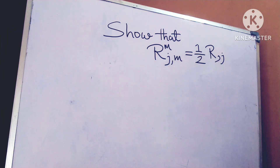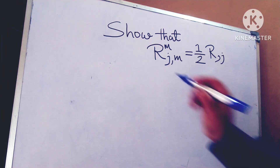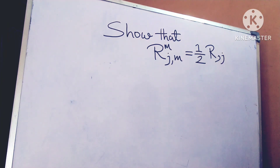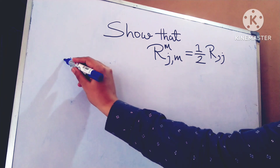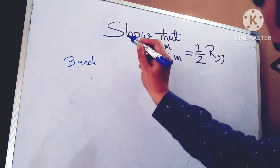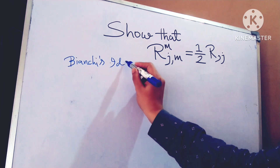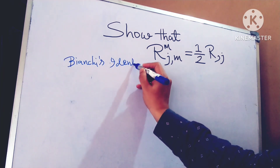So friends, I have to prove R_MJ,M equals to half R_,J. To do this, you need to know Bianchi's identity.